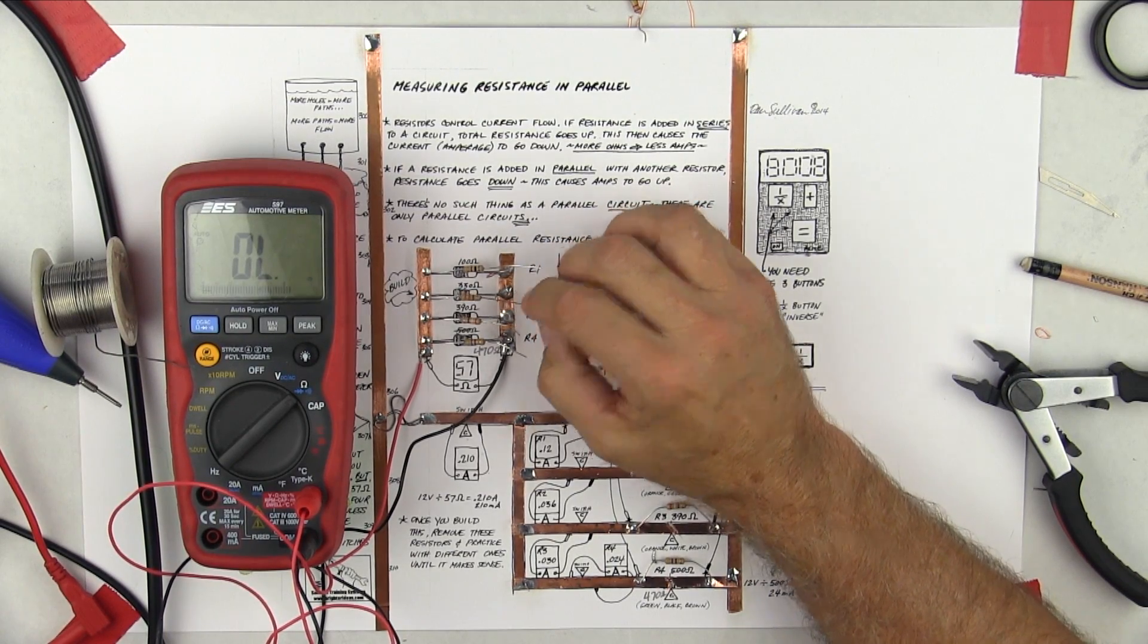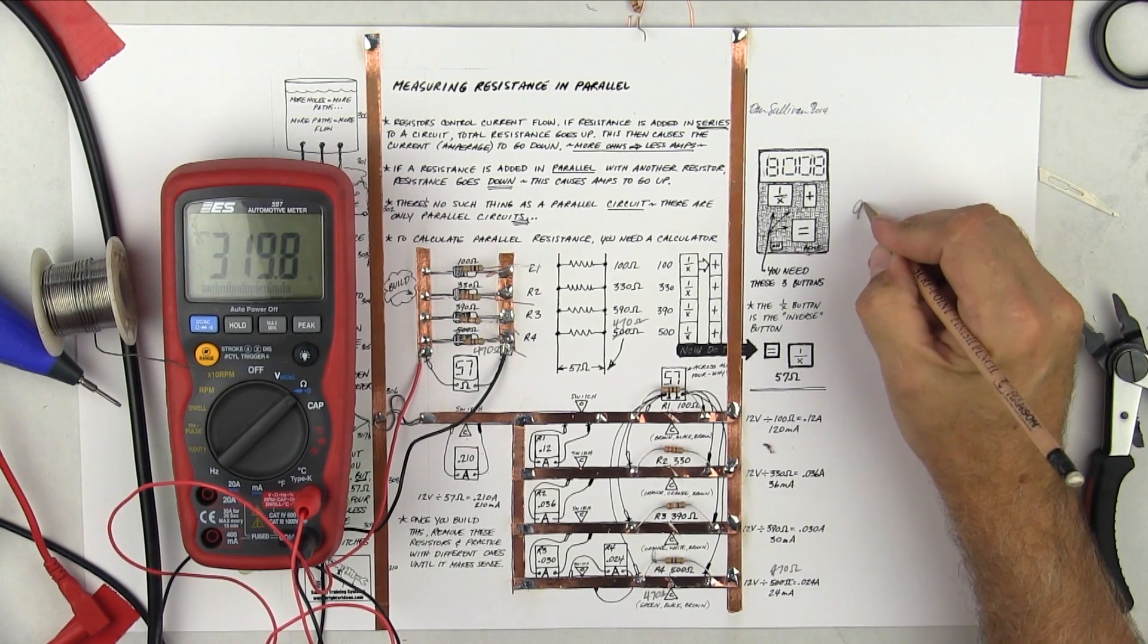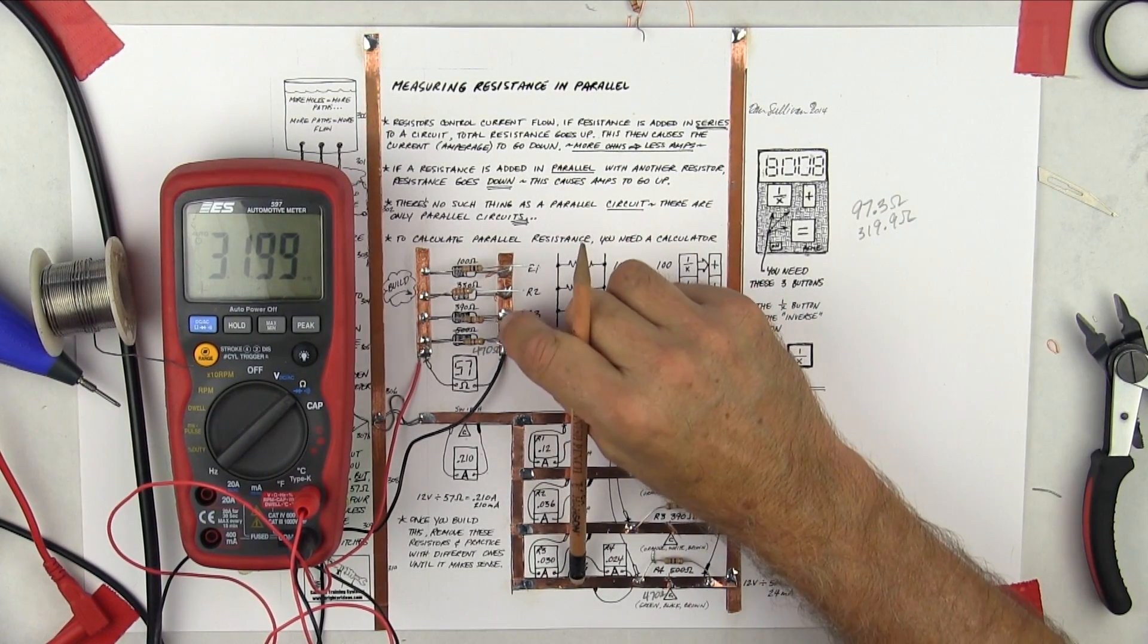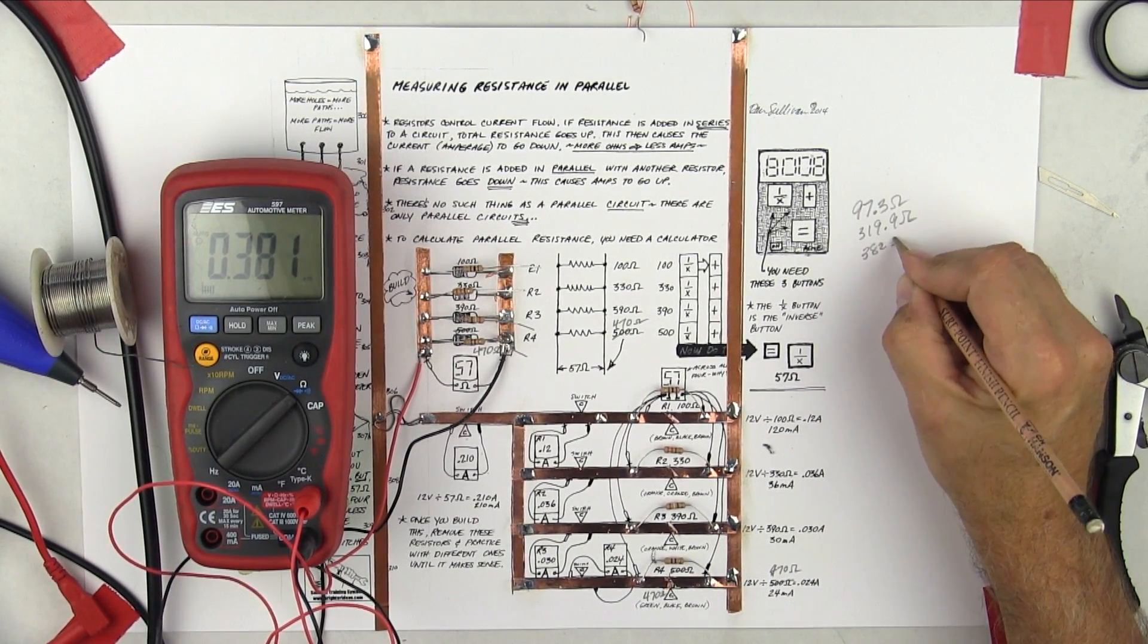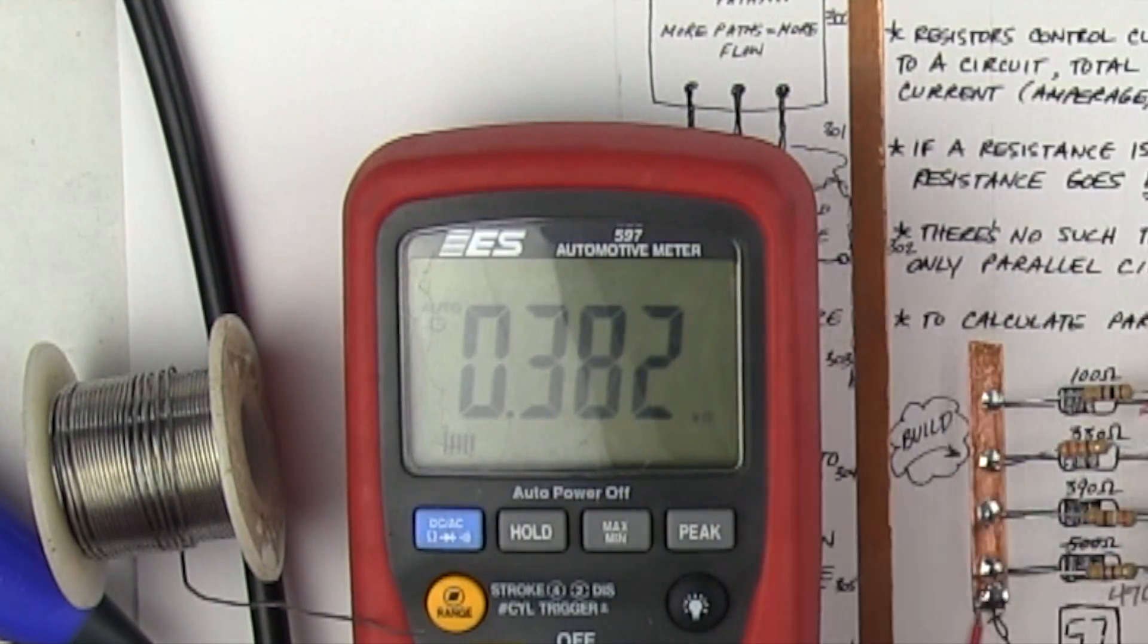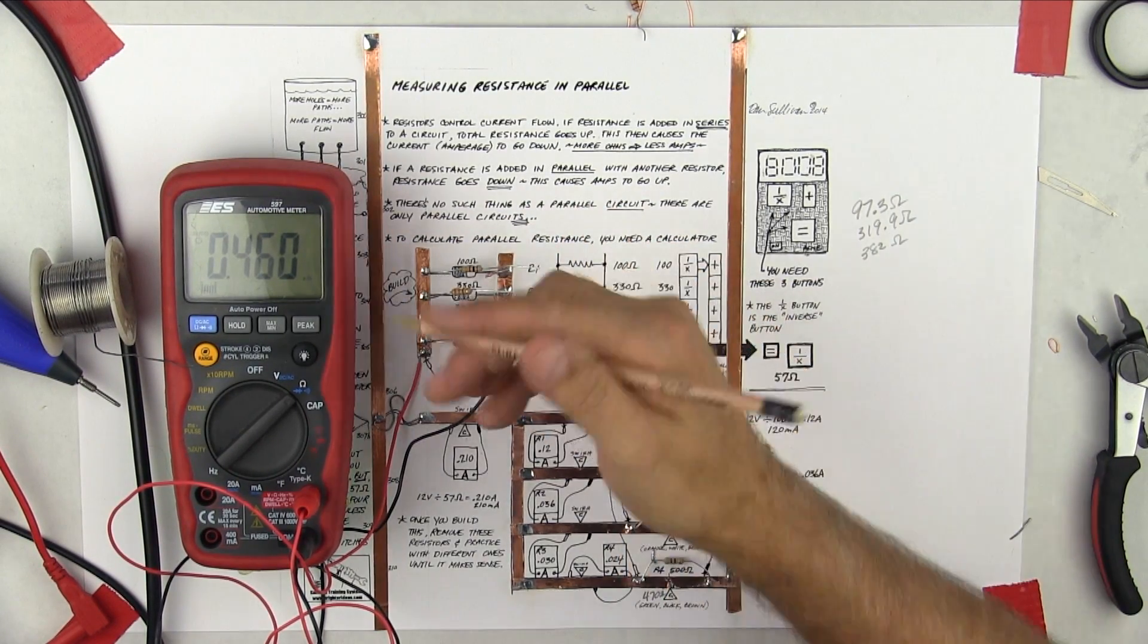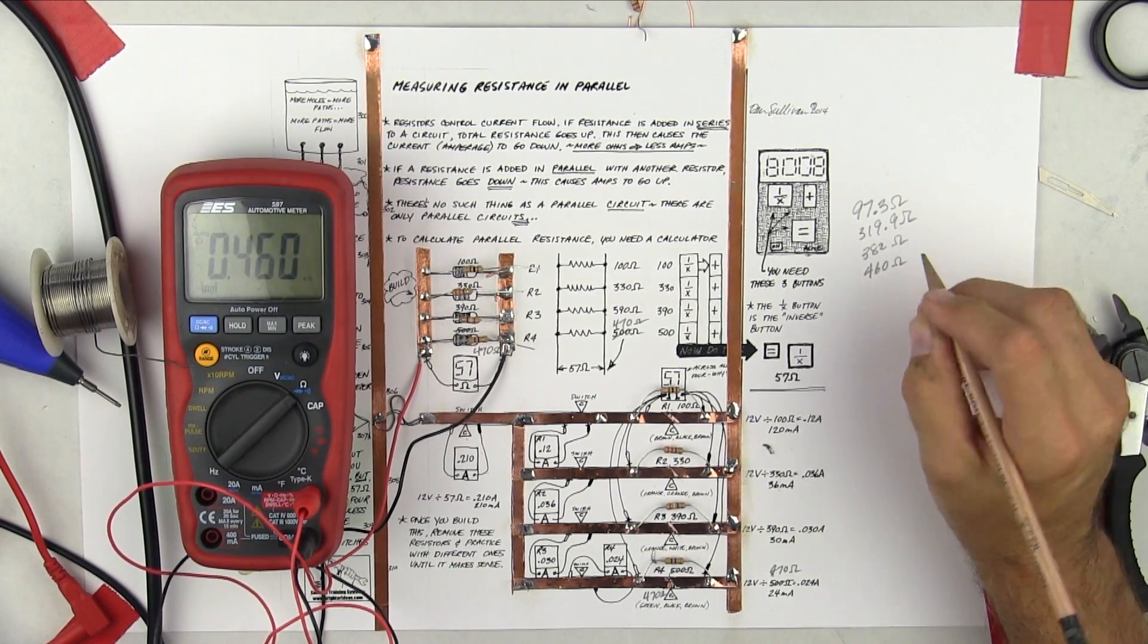So that's going to be 97.3. This one is 313, so I guess I should be writing these down. So I've got 97.3 ohms, 319.9 ohms. Take that out and put this one in. You get 0.381, which is 382 ohms, because that's 0.38 of 1,000. There's the K for 1,000. Let me pull this one out and put this one in, and that's 459 because it's 0.459K or 460. So it's supposed to be 470, but 460 is definitely within 5%.